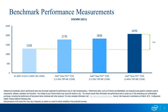For DGEMM performance: your processor can expect something like 1.8 teraflops double-precision DGEMM for a single node. That's about 60 percent more than what a dual-socket Broadwell node currently does.